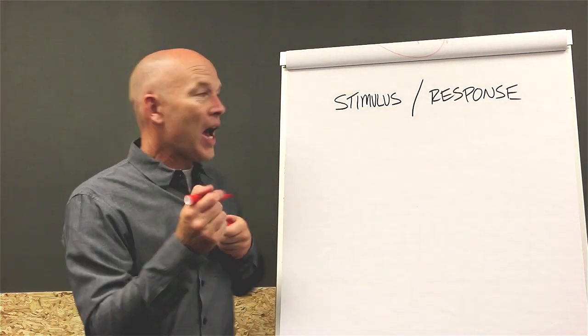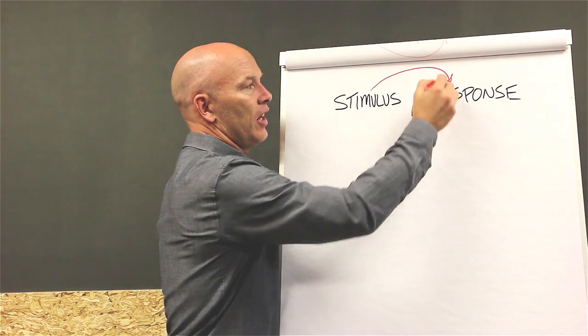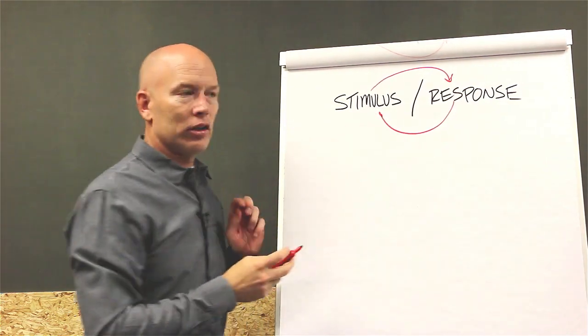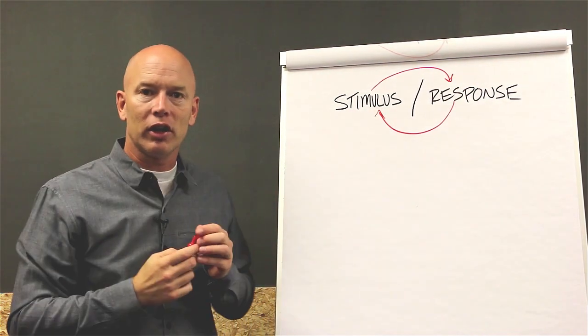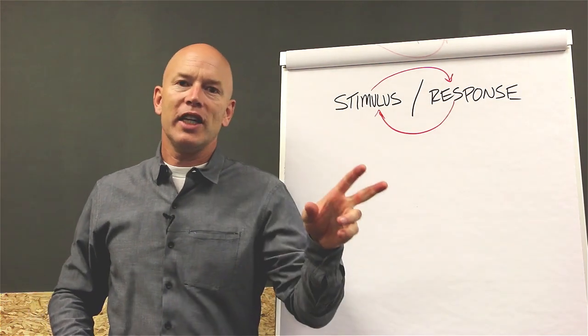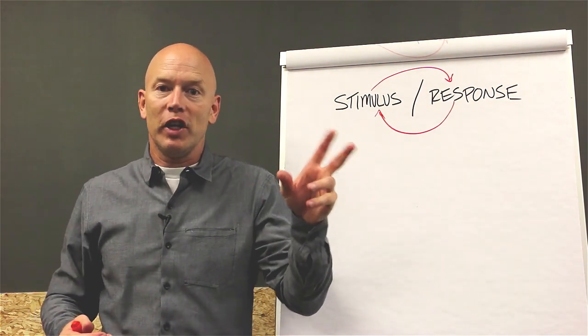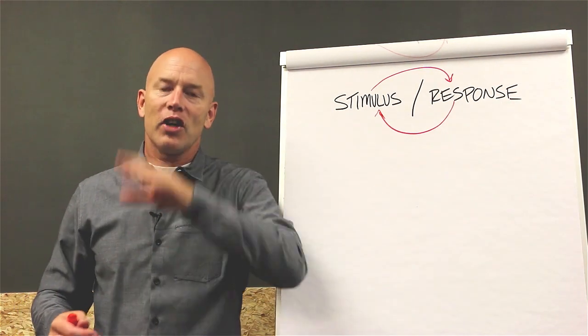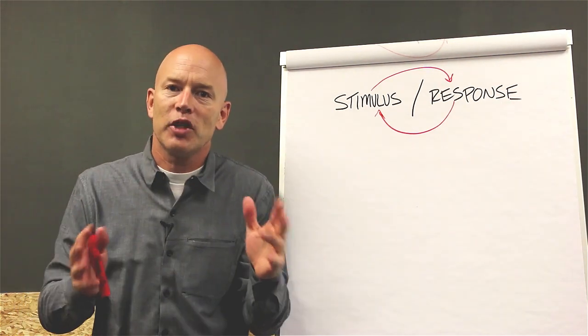Now what ends up happening is you just get this cycle. It becomes this habitual cycle that there's a stimulus, boom, we respond. The response leads to shame or blame or feeling bad. That's a new stimulus. Boom. We respond. And there's no space between.